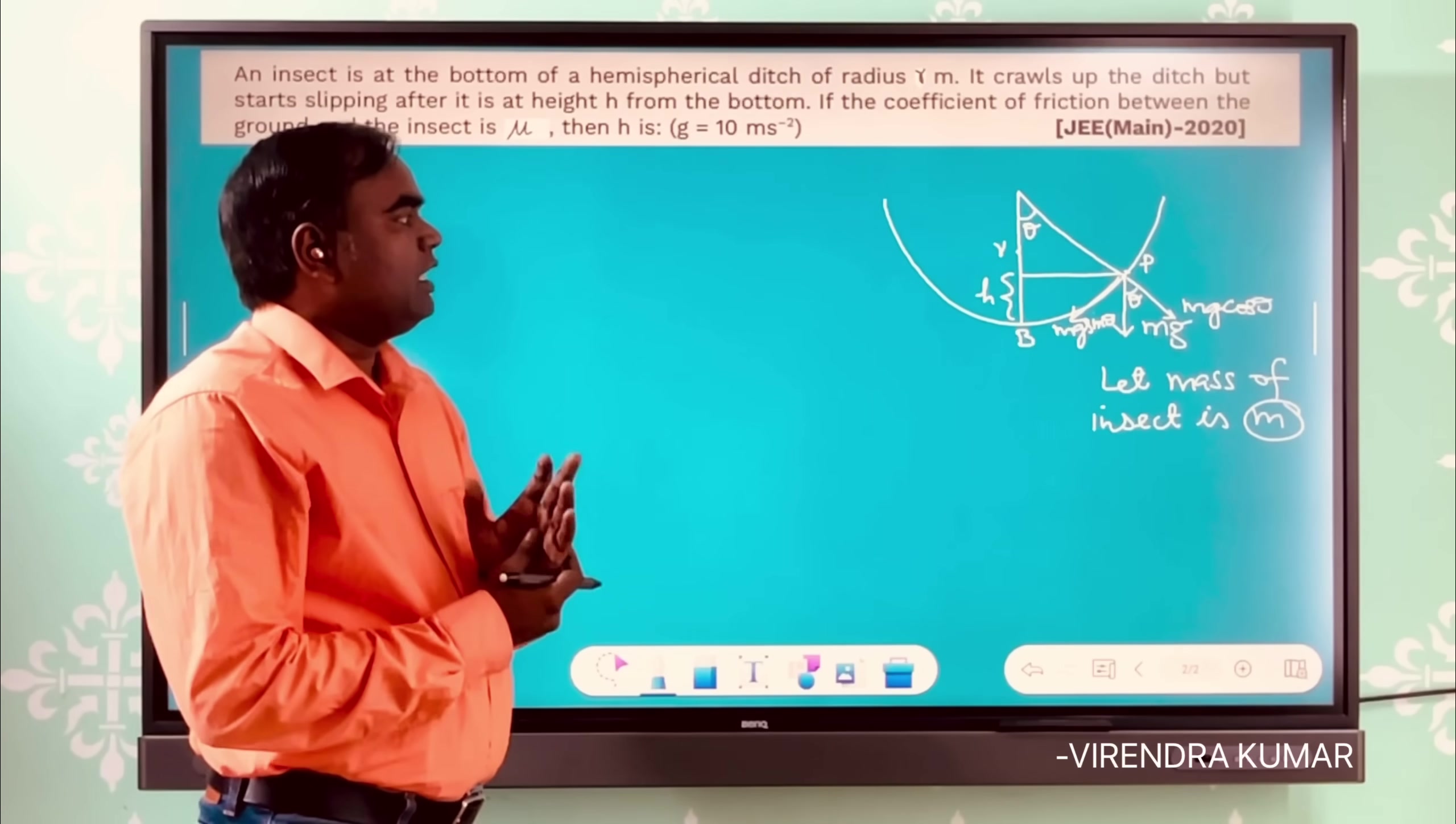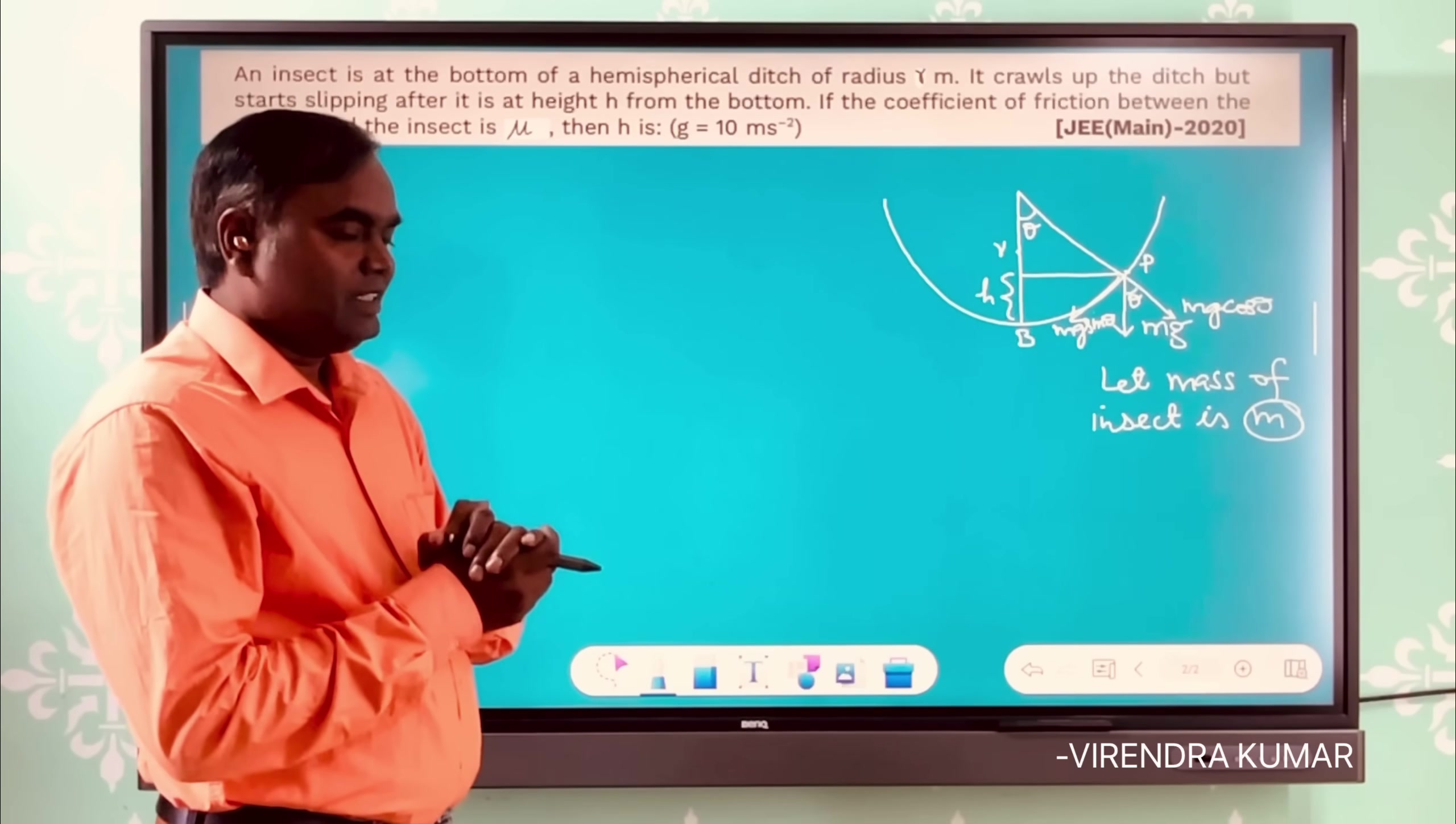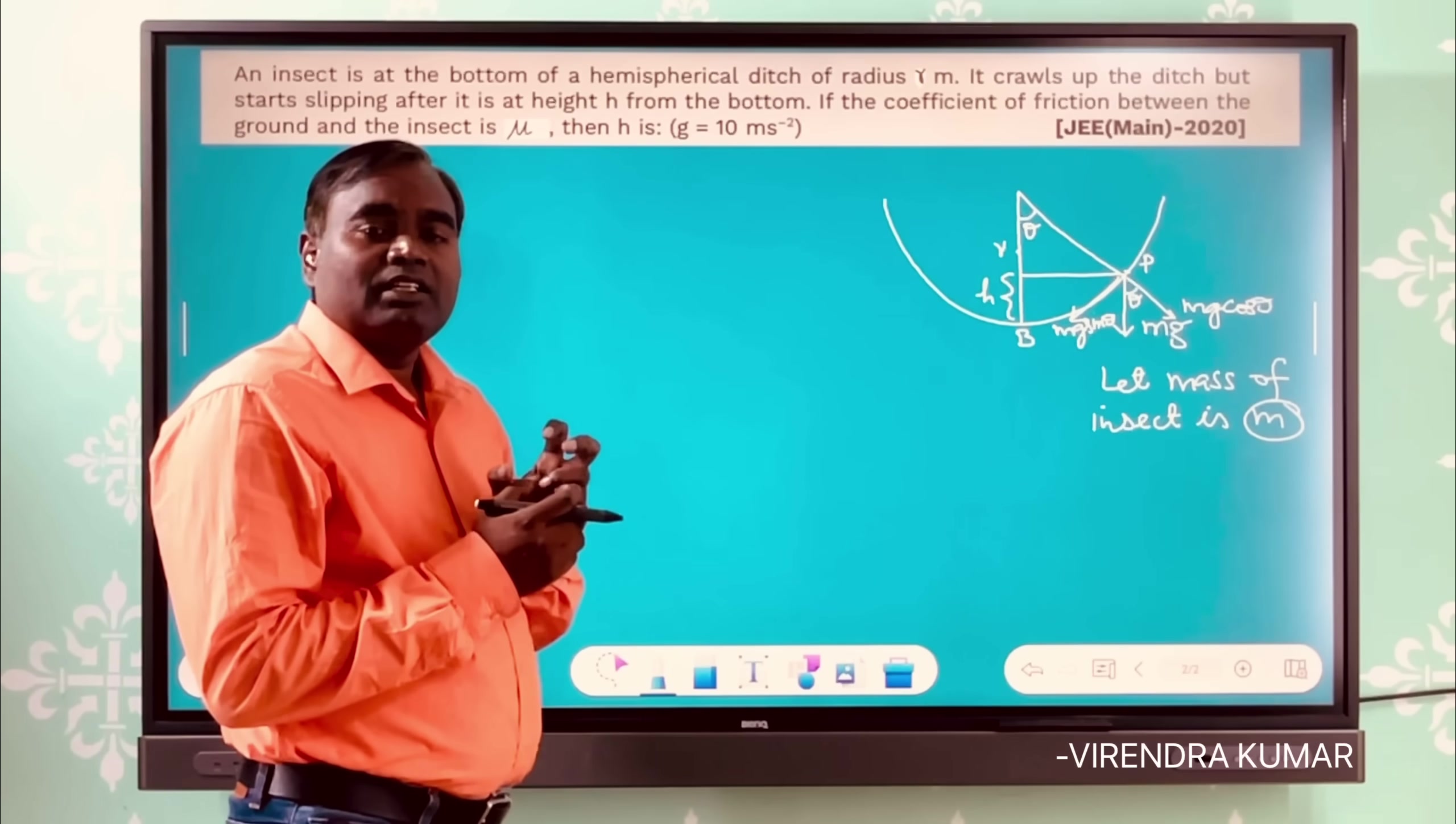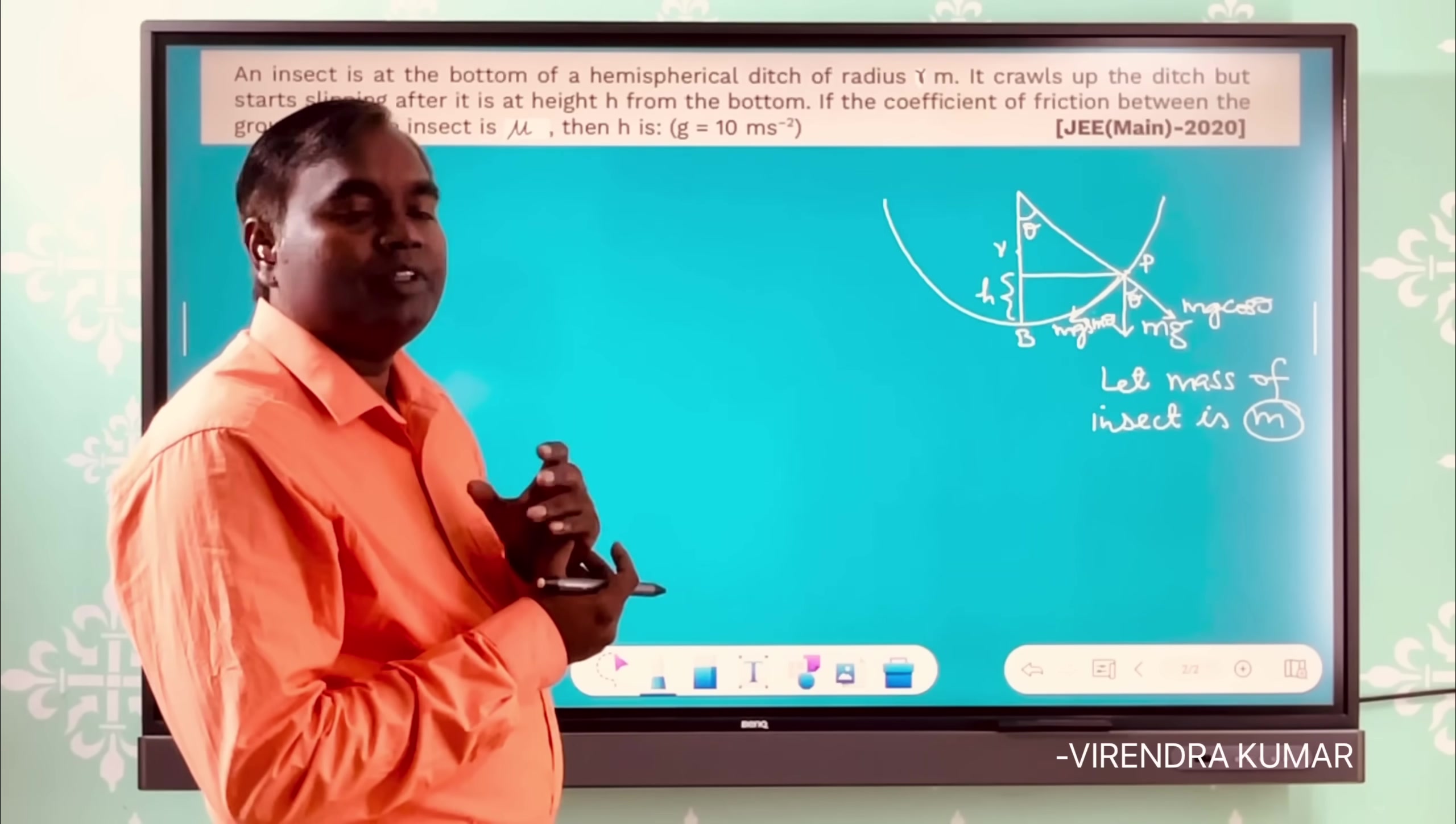So you must note that there is friction between the ground and the insect, and that friction is providing the support to the insect in moving, in crawling.